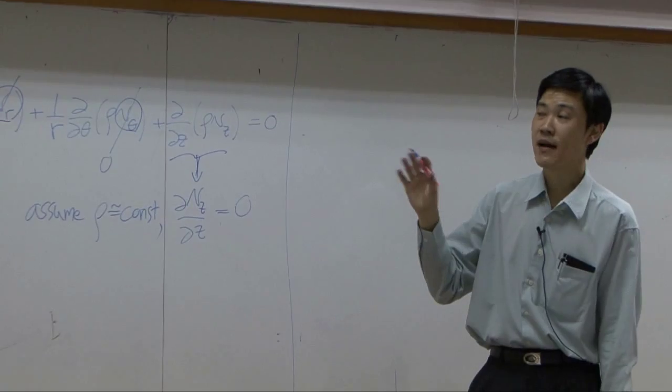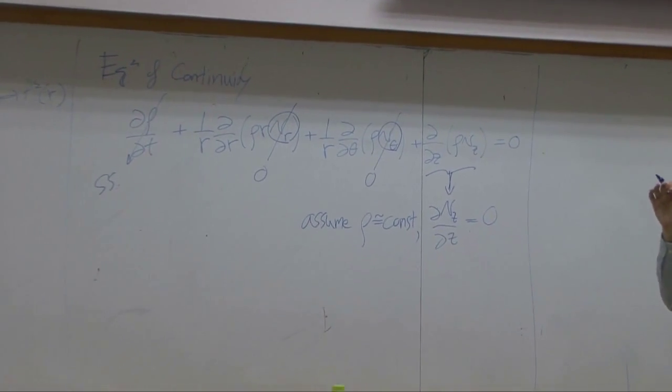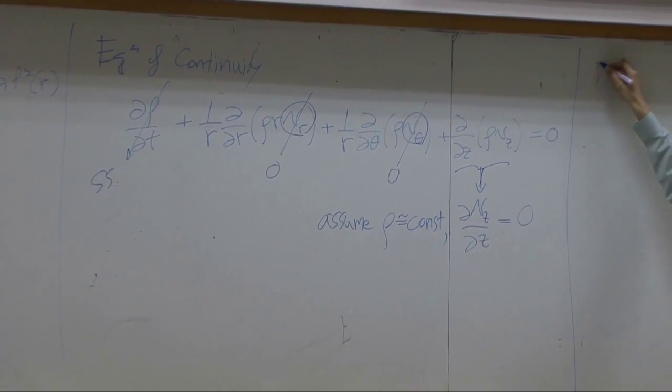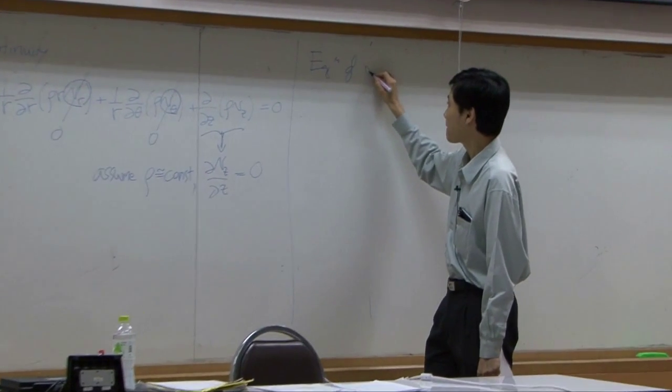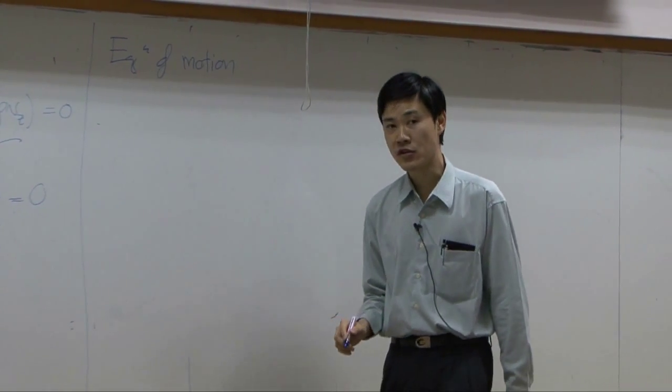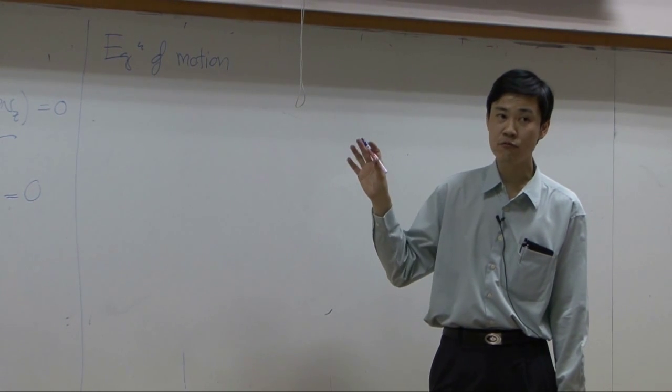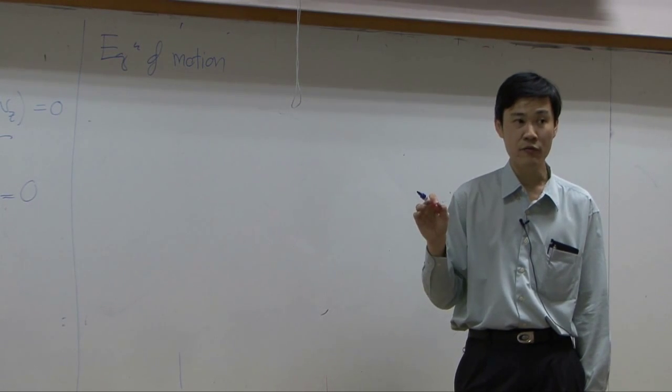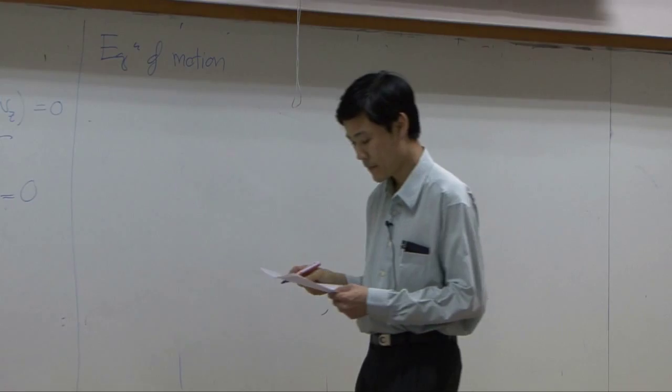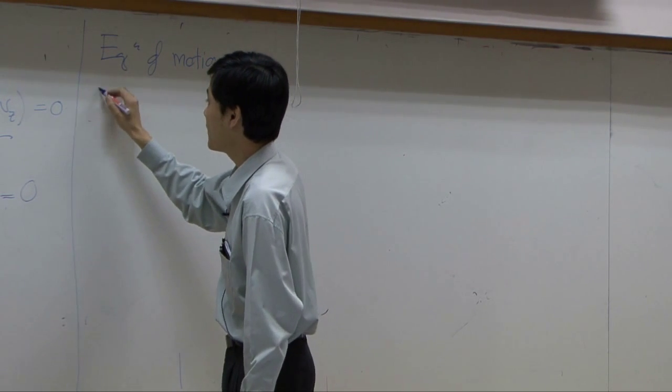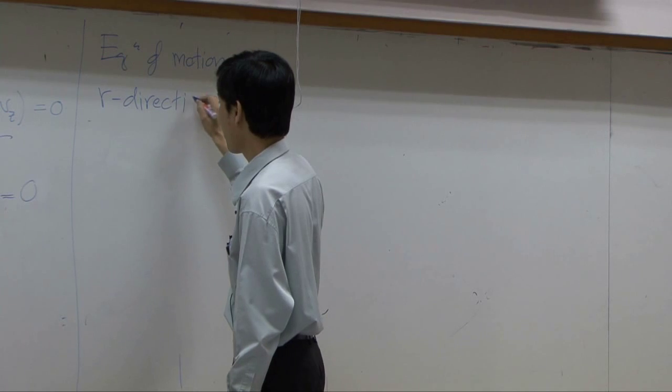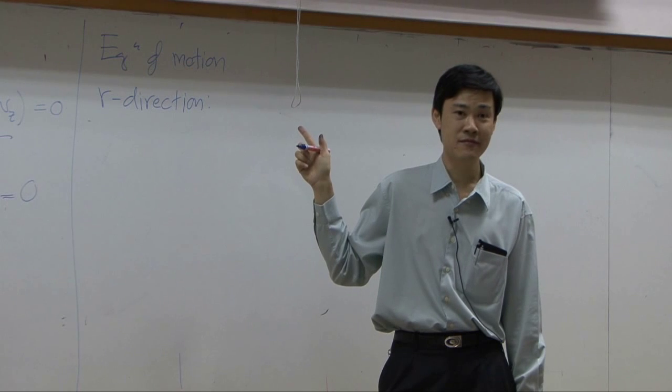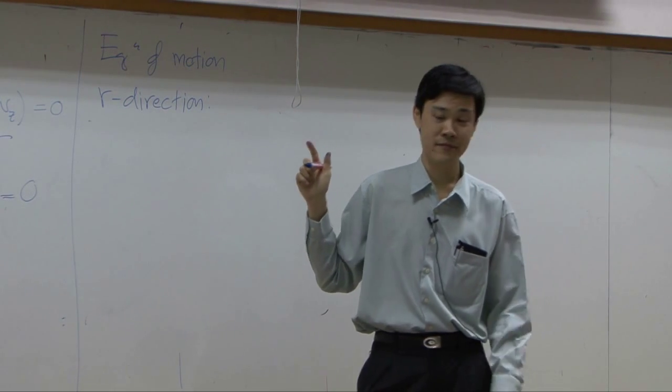So by doing that, by doing what we discussed, we'd like to start with momentum balance first so that we can obtain velocity profile. We should move on to equation of motion, or Navier-Stokes equation. Of course, we can use this one under assumption that density and viscosity does not change significantly with respect to position. So, in r direction, should I do this in detail or just give you the result?